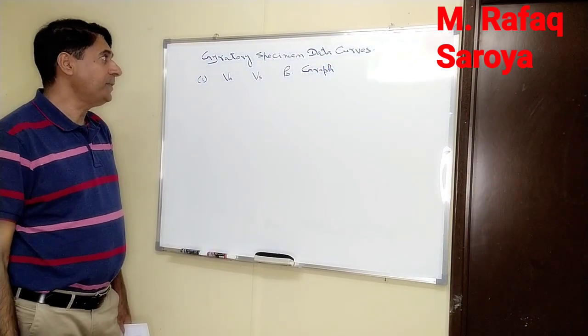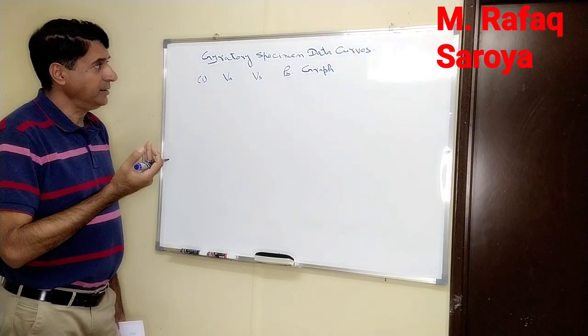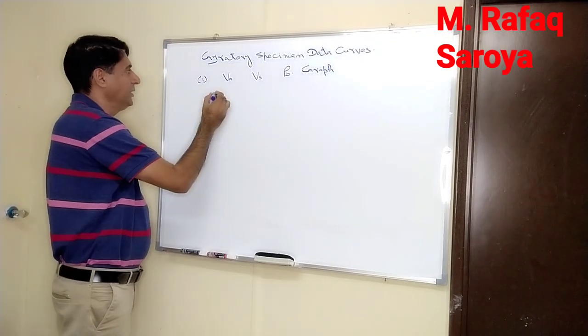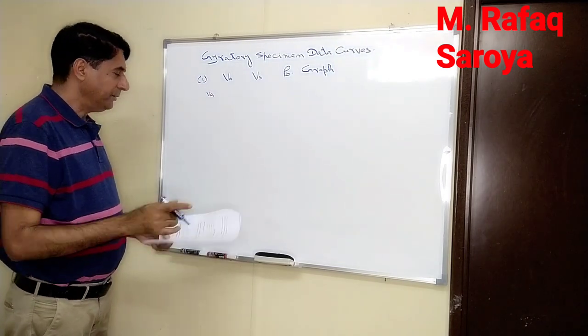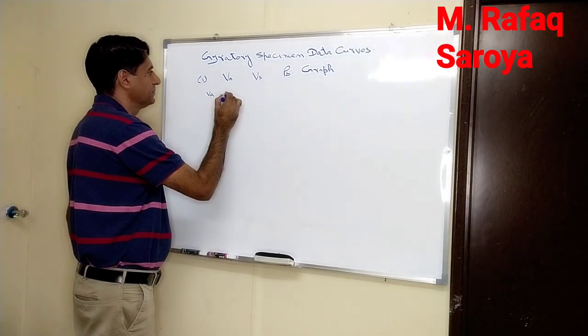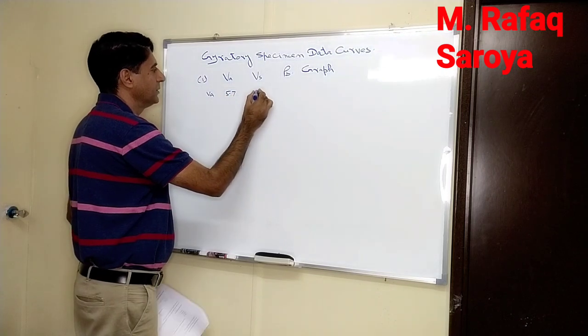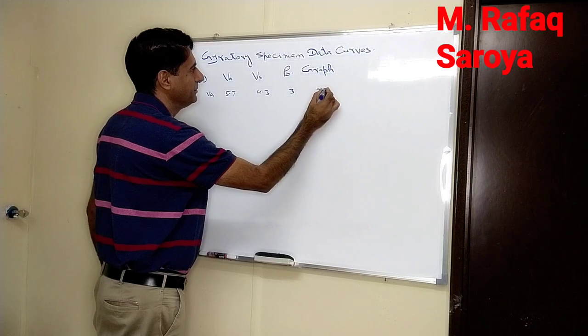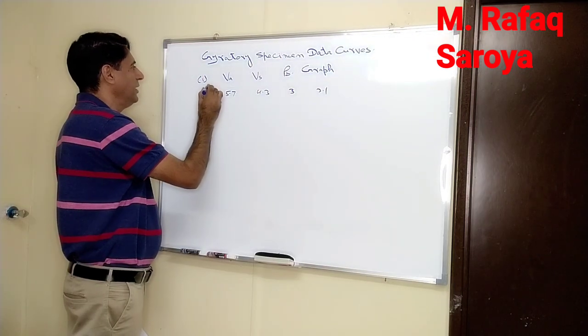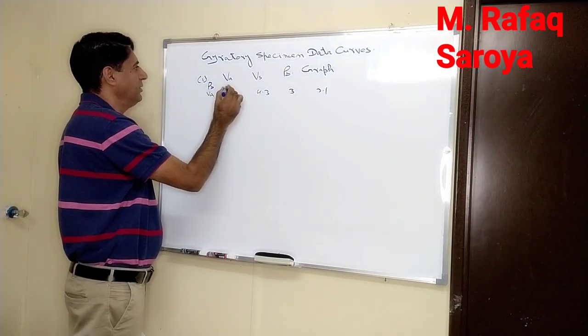For your understanding, the value of VA is known to be 5.7, 4.3, 3, and 2.1, and these values are calculated for binder content 4.1, 4.6, 5.1, and 5.6 respectively.